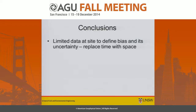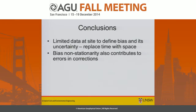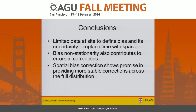In conclusion, if you have limited data to define your bias and uncertainty, you can replace time with space. Bias non-stationarity does contribute to errors in the corrections, and this spatial bias correction approach shows some promise in providing more stable corrections across the full distribution. Thank you.